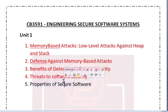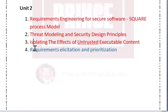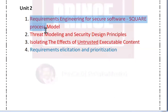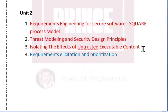Threats to software security. In the unit tools, we will talk about three topics: Requirements Engineering for Secure Software, the Aspire Process Model, and threat modeling and security design principles.